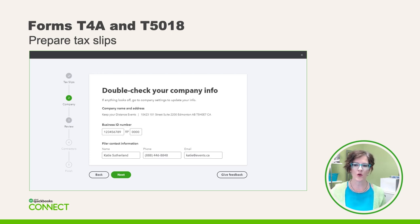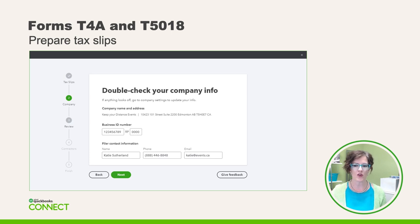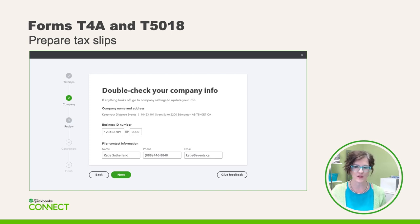In our next step, we need to verify or enter any information regarding the company. If you're filing a T4A, the account will be pointing to your RP0001 account — that's payroll. If you're filing a T5018 form, you'll be recording information that will populate in your RZ0001 account. You can use the back button anytime to return to a previous screen, so there's no need to worry about getting it right the first time.